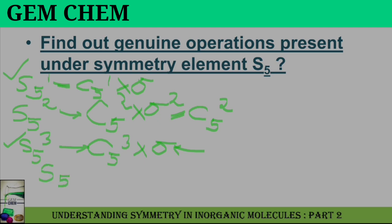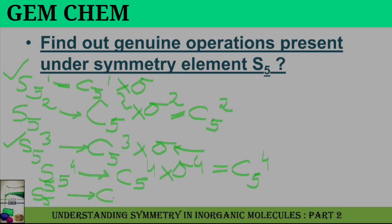For S5⁴, we have C5⁴ times sigma⁴. Since sigma⁴ is equivalent to E, we simply have C5⁴, which is not a new operation. For S5⁵, we have C5⁵ times sigma⁵. Sigma⁵ is equivalent to one sigma, and C5⁵ is equal to the identity element, so we have just sigma. This is also not a genuine operation.